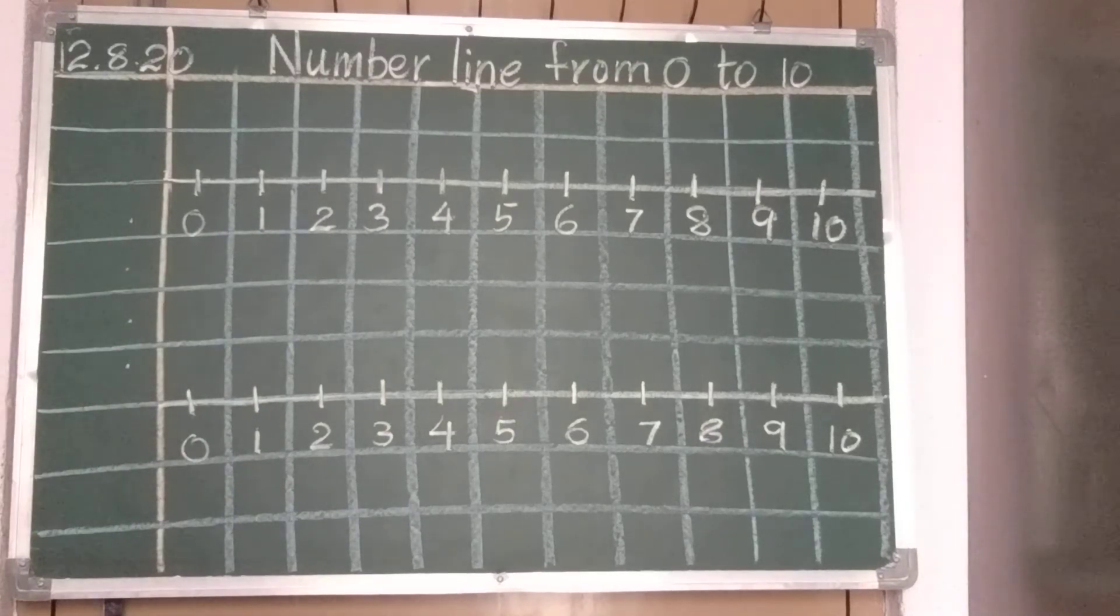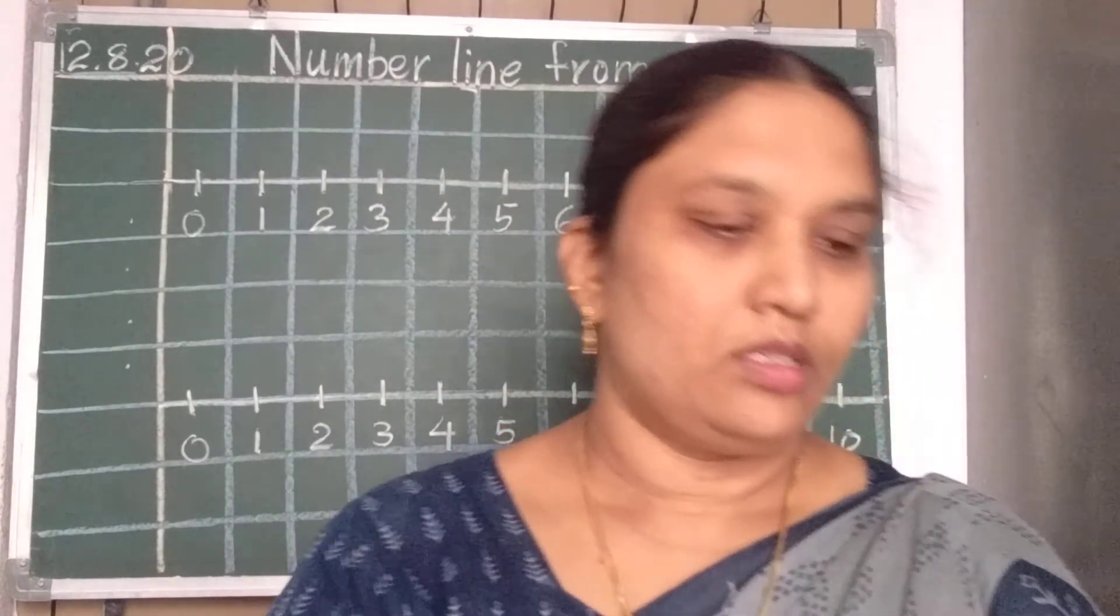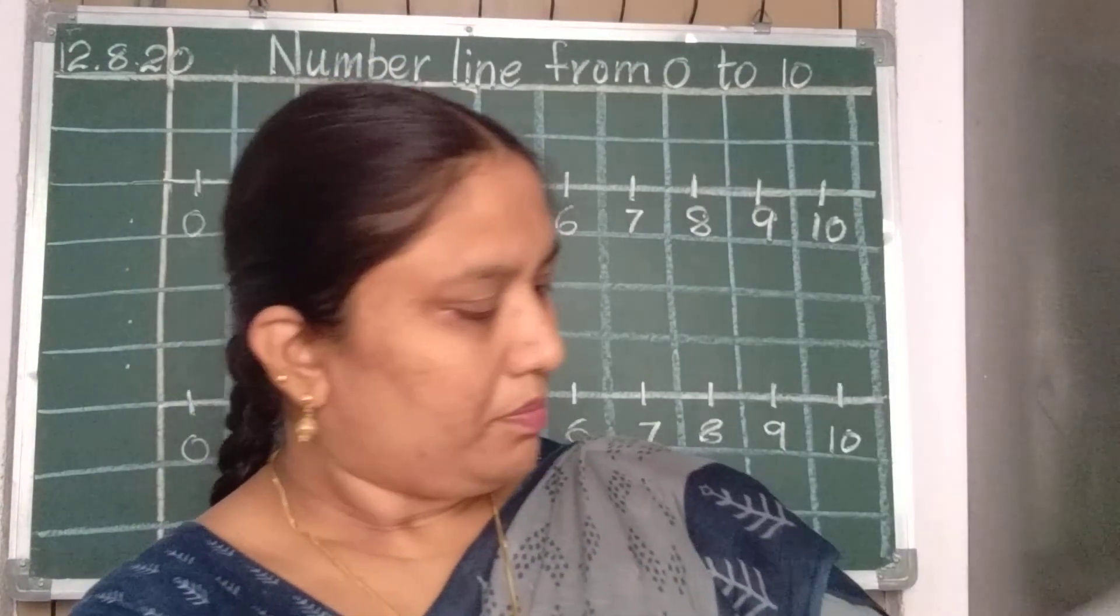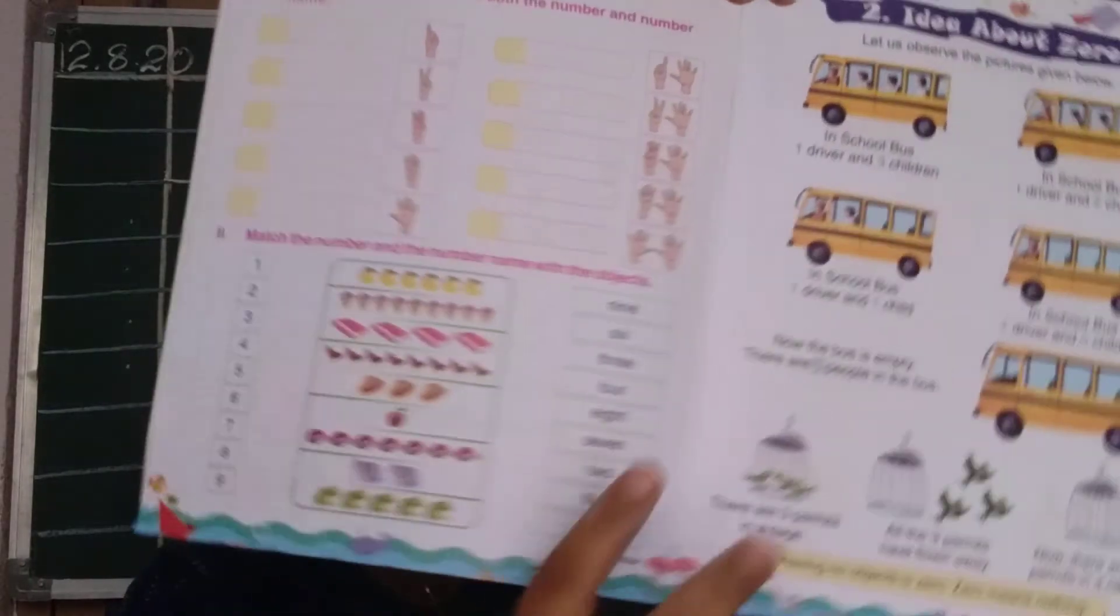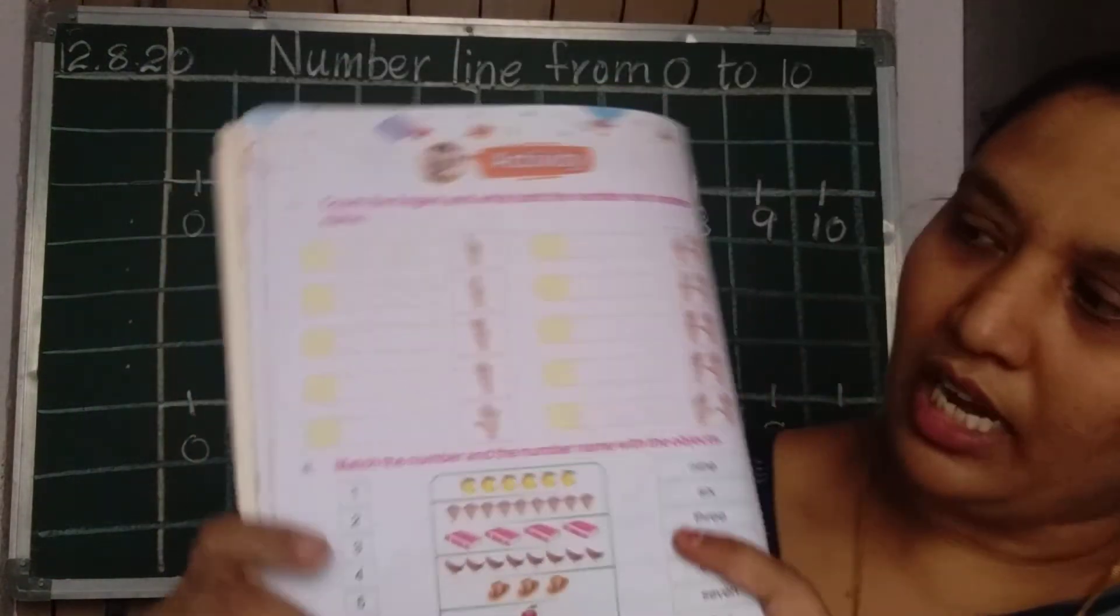Like this you should draw in a notebook. And after doing this number line, see this is your course book. In that, page number 28, page number 28, this page, this page you have to do.